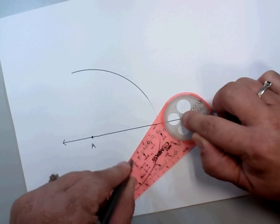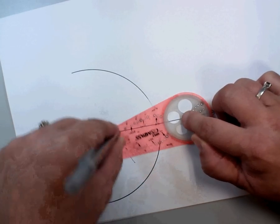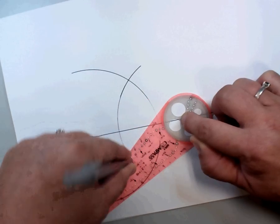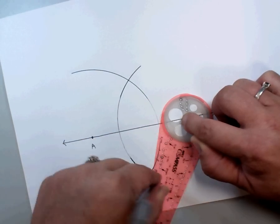I still have my pin in the exact same hole that I had it in before, and we're going to draw an arc that is going to cross the arcs that we did from point A.